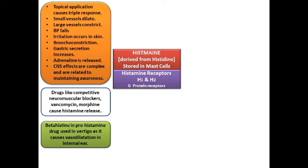As far as pro-histamine or histamine-acting drugs are concerned, there is a drug called betahistine. This drug is used extensively in Meniere's disease and vertigo because it causes vasodilation in the internal ear, which helps bring down symptoms. It brings about changes that help in the treatment of vertigo in these individuals.